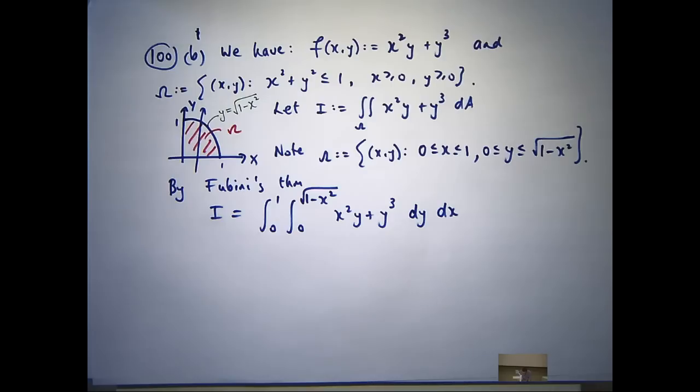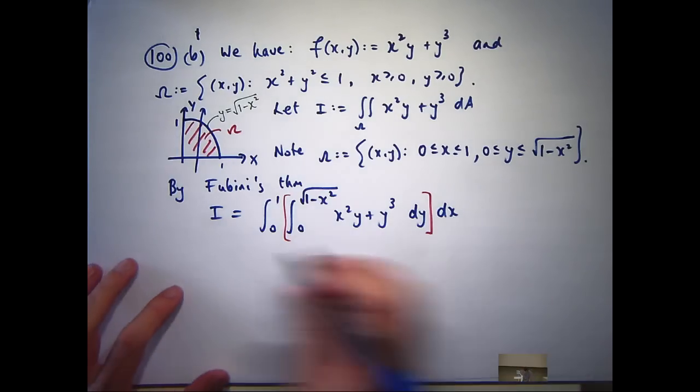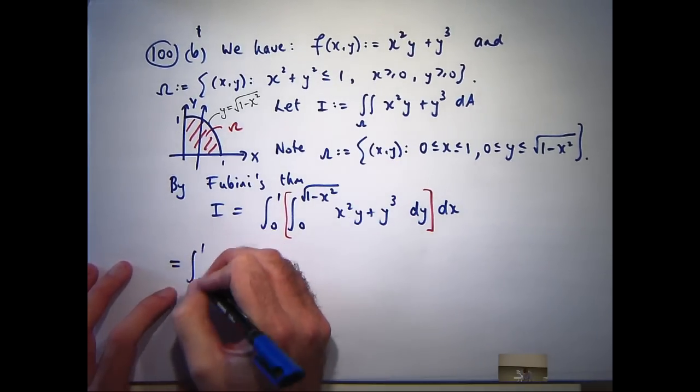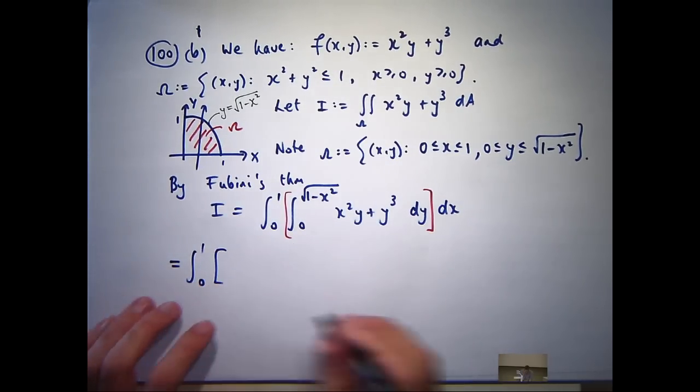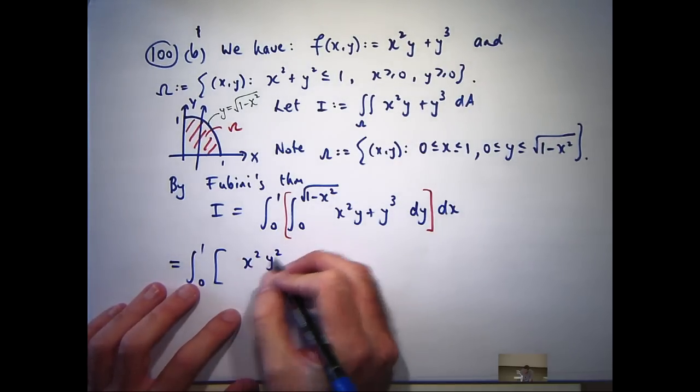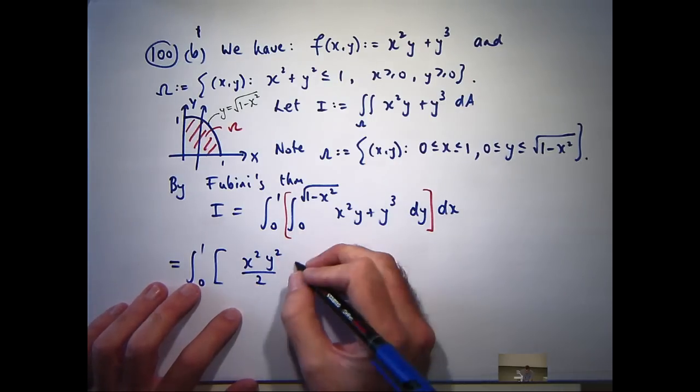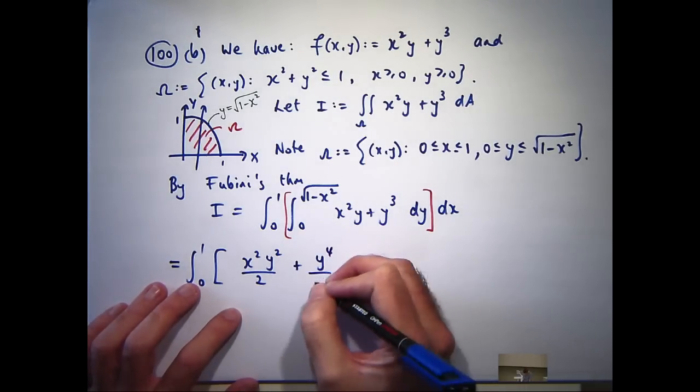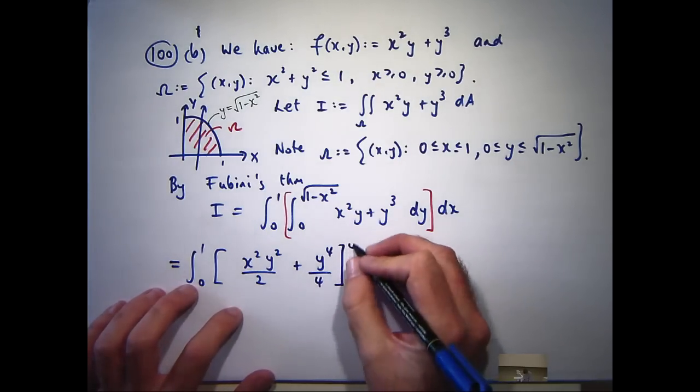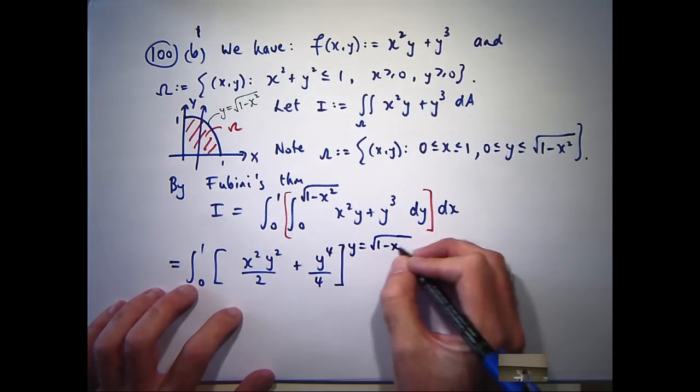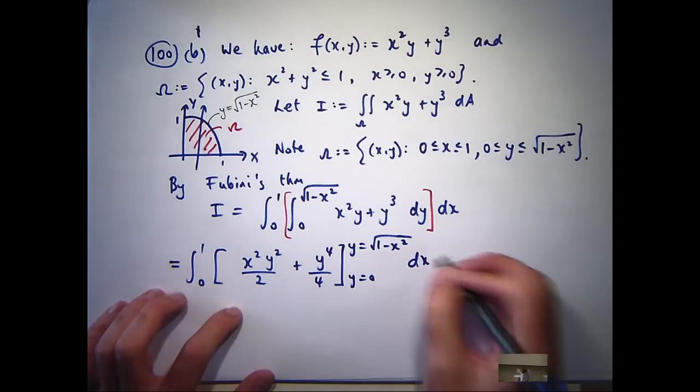OK, so it's not that hard to integrate now. You do the inside integral first. So you imagine all the x's are constants, you integrate with respect to y, plug in the limits of integration. Then you move to the outside integral, integrate everything with respect to x. So let's do this. So if I integrate with respect to y here, I'm going to get x squared y squared on 2. This is going to go to y to the 4th on 4.